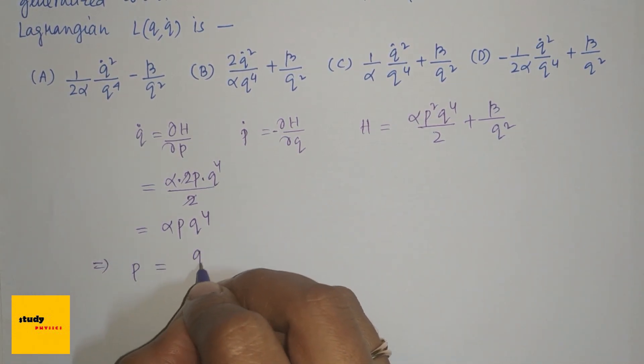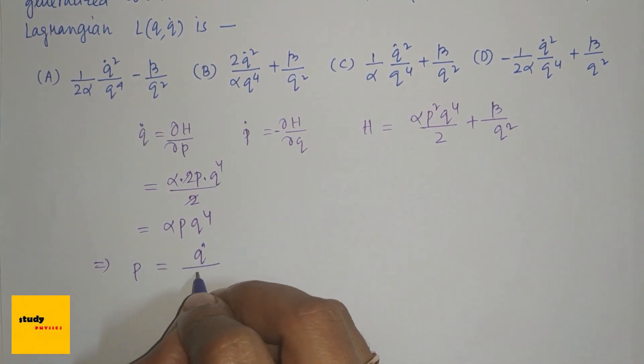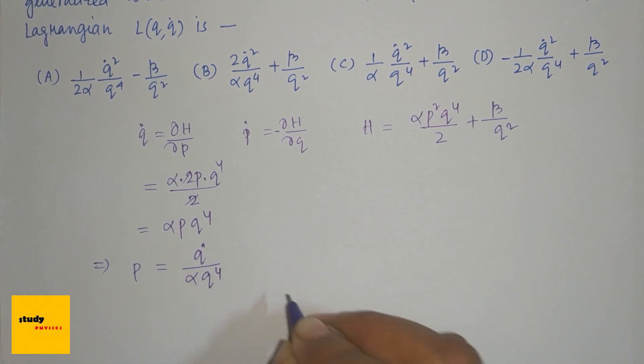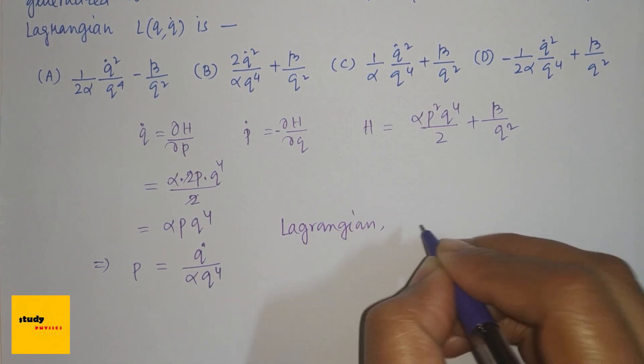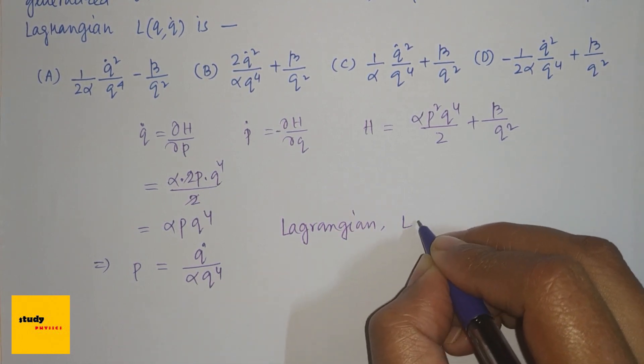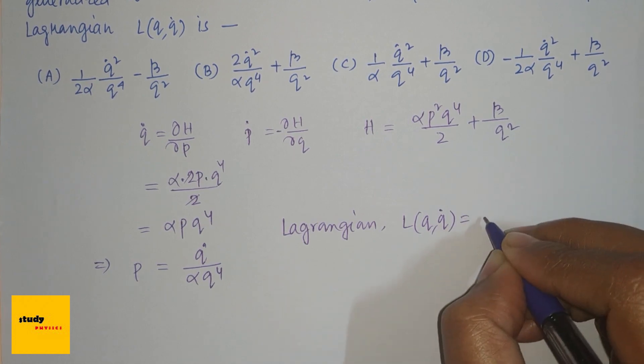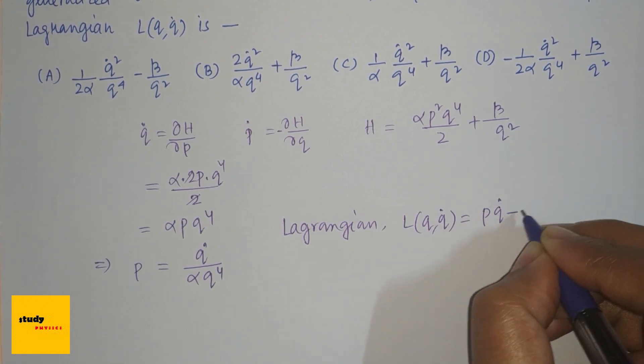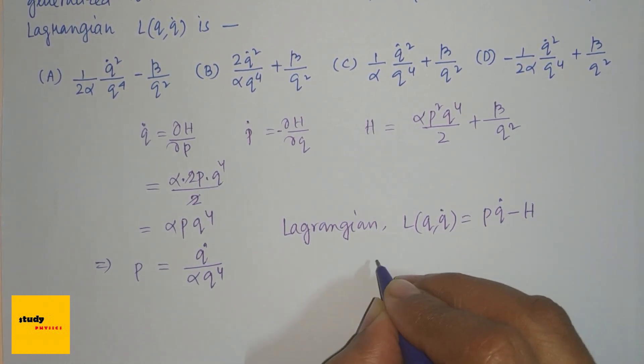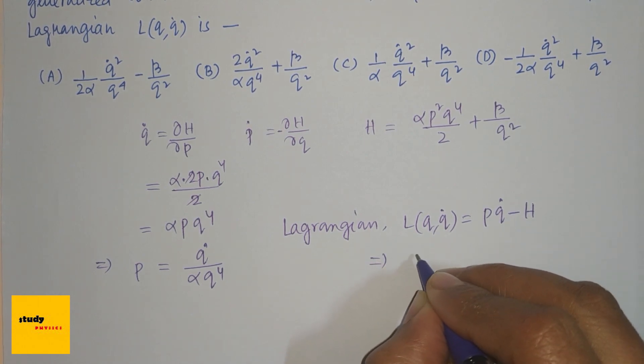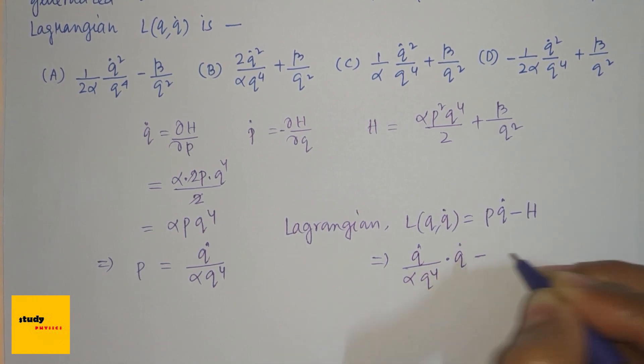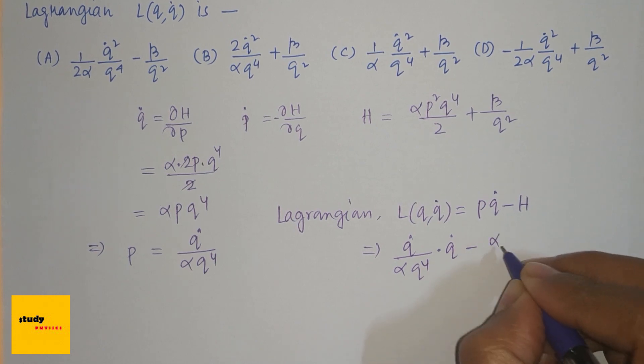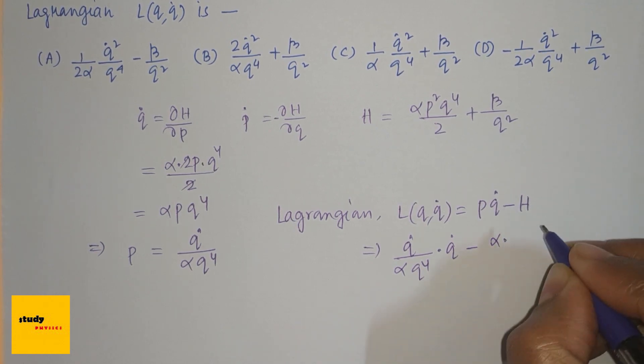From q̇ = αpq⁴, we can write p = q̇/(αq⁴). We know the Lagrangian L(q,q̇) = pq̇ - H. So substituting, L = [q̇/(αq⁴)]·q̇ - H. We put p's value into the expression.